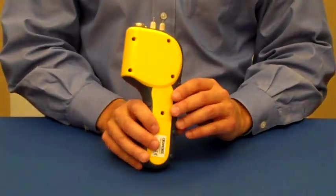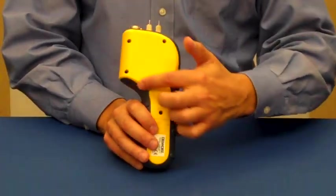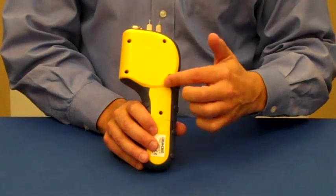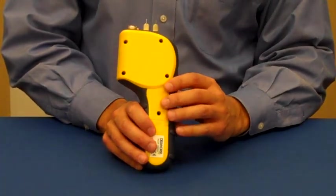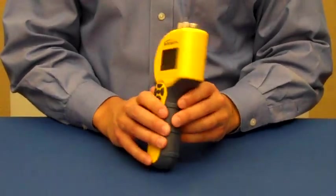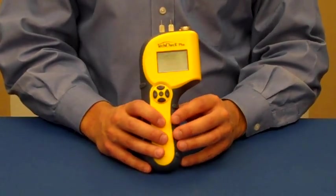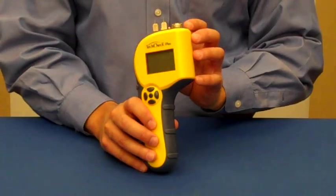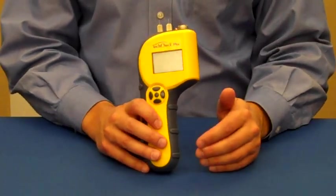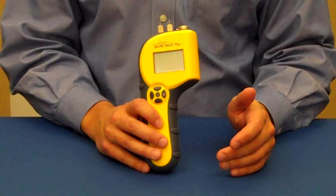The non-penetrating or scanner portion of the meter is right on the back of the meter here. This is great because it does allow you to check large areas without making holes in the material. Once you've identified elevated moisture levels with the scanner, then you can go in with the pins to get more precise readings.